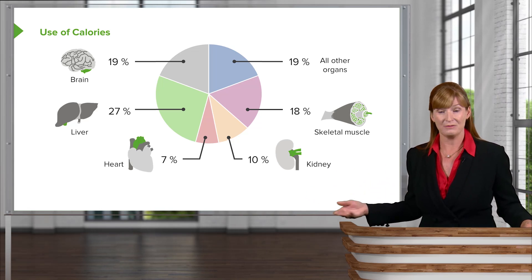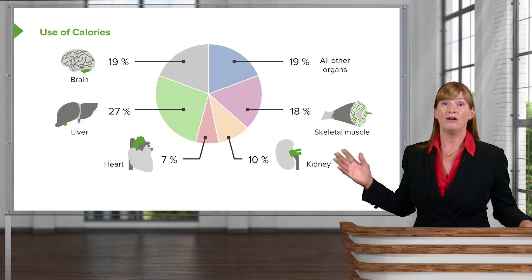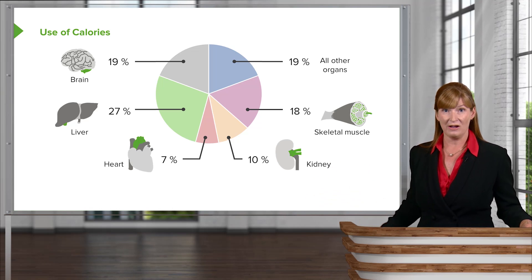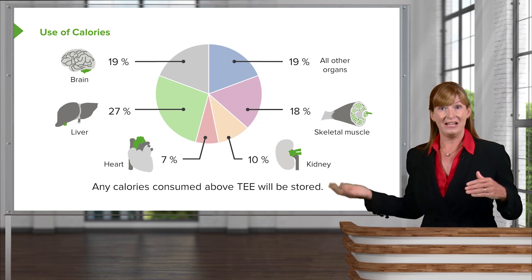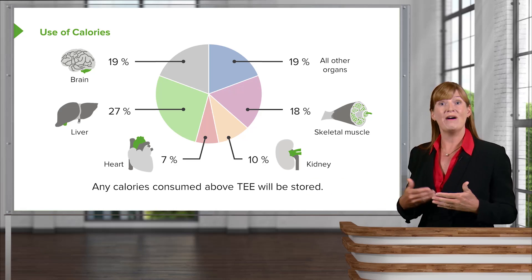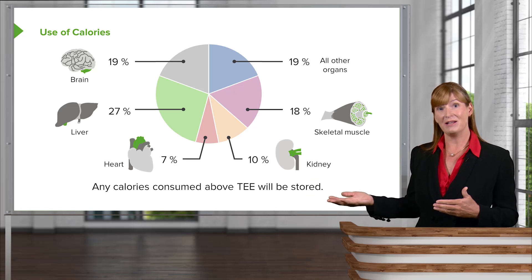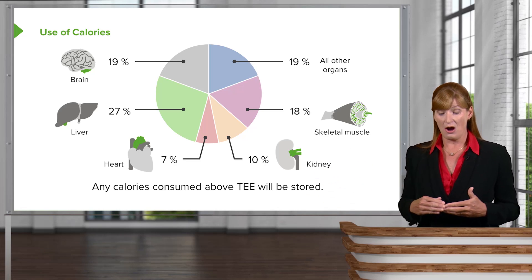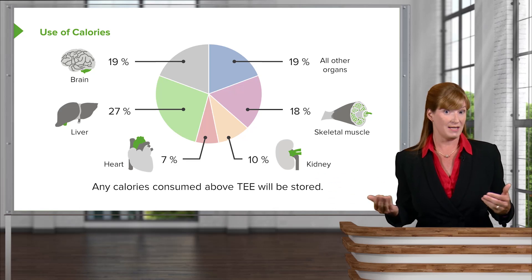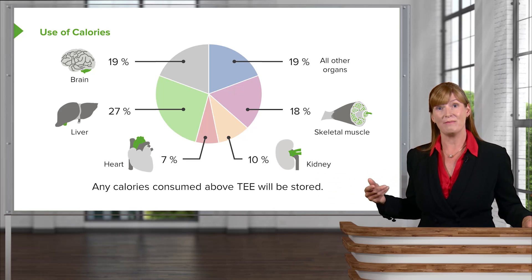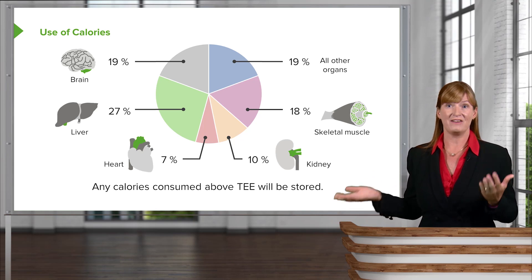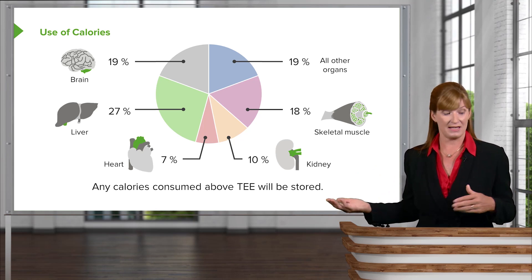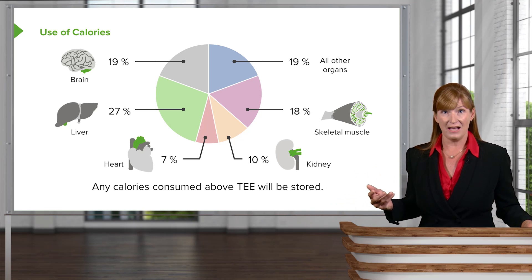Don't go memorizing the numbers — understand the major users of our basal metabolic rate and the calories attributed to that. Brain, liver, skeletal muscle, heart, and kidney relative proportions are good enough, because sources will vary on the specific percentages. Any calories that we consume above and beyond our basal metabolic needs are going to be stored, and we generally will store them as fat, which can become an issue if we have an imbalance in the intake and output of those calories.